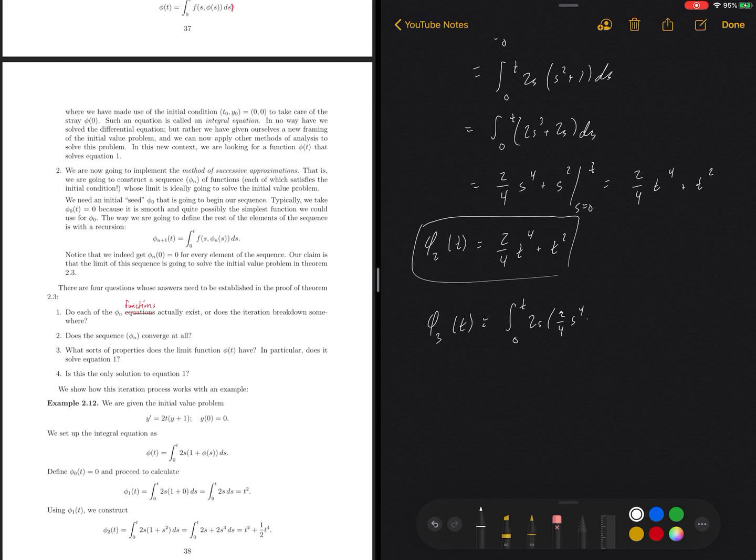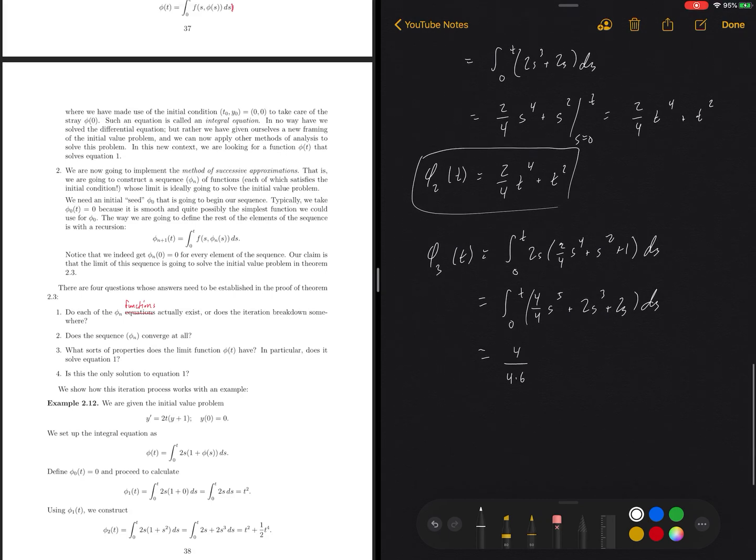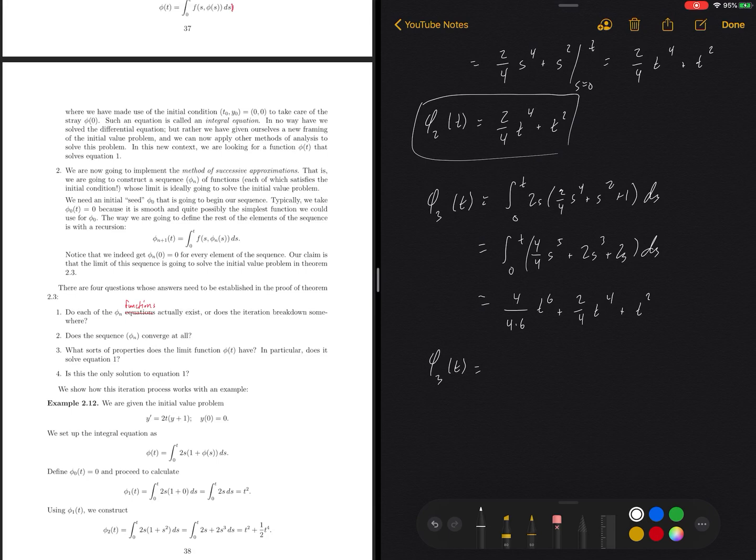I'm not going to rewrite the entire thing. This will be 2 fourths t to the fourth. I won't simplify it. 2 fourths t to the fourth. No, these are s's. s to the fourth plus s squared ds. And I integrate this guy. Oh, there should be a plus one in here. Plus one ds. And then we go ahead and continue solving this. So this would be 4 over 4 s to the fifth plus 2s cubed plus 2s. Integrate that with respect to s and then pop in a t. So I wind up with 4 over 4 times 6s, or this will be a t to the sixth, and then I'll wind up with a 2 over 4 t to the fourth plus a t squared.